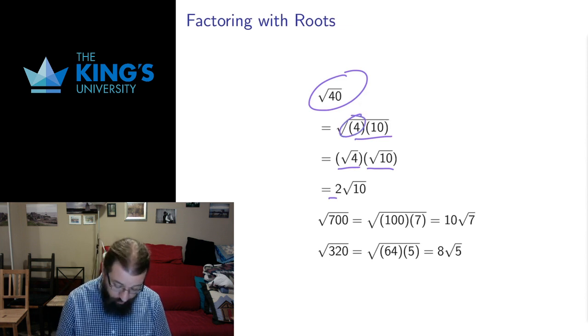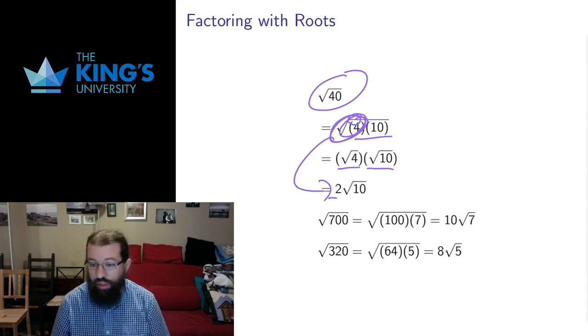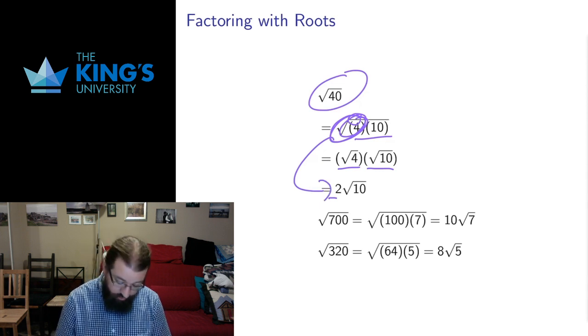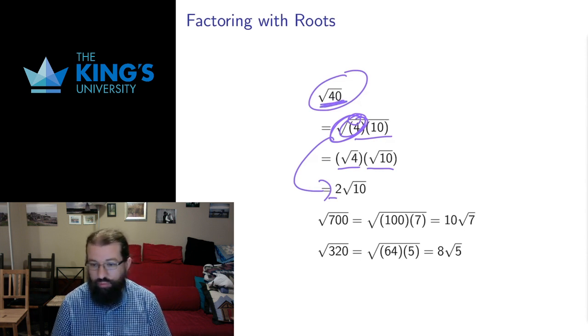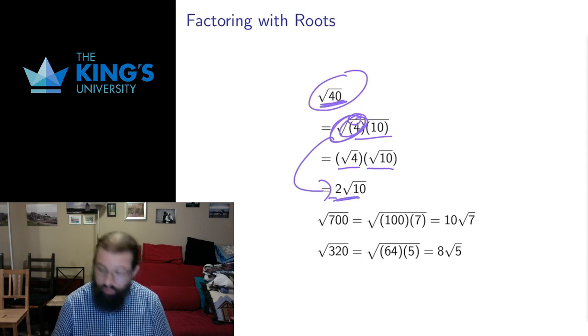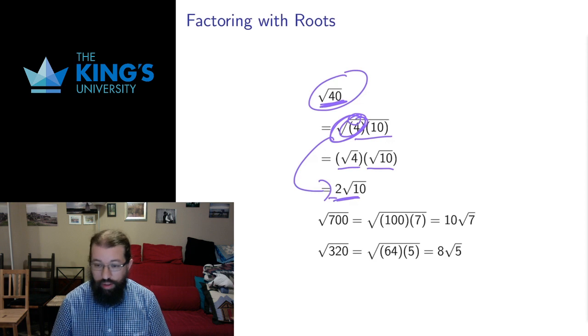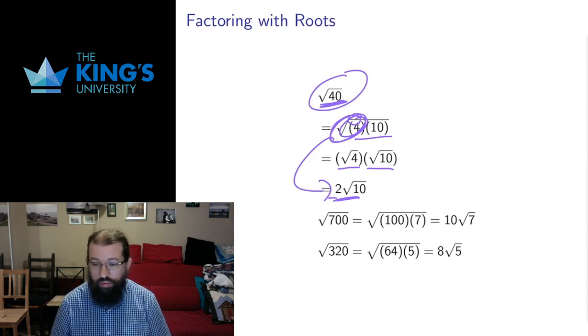So by pulling the 4 out, I take its square root and it becomes the number 2 outside. So I can simplify or write in a different form square root of 40 as 2 times the square root of 10. And if there's a 2 to cancel off or if that 2 is useful to me, then this might be a very nice thing to do.